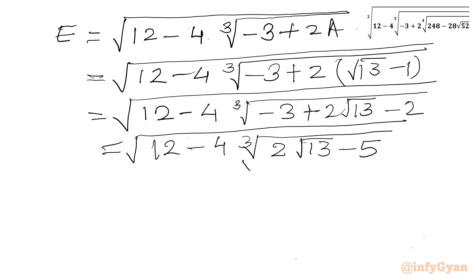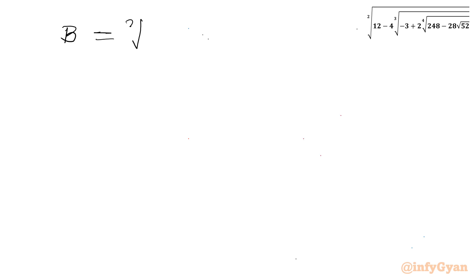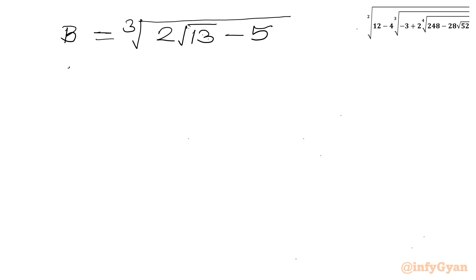Now I will consider this cube root equal to B, and evaluate it separately. So B = cube root of (2√13 − 5). Let us cube both sides: B³ = 2√13 − 5.